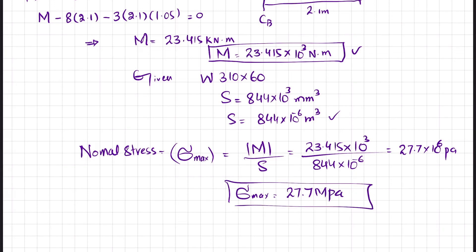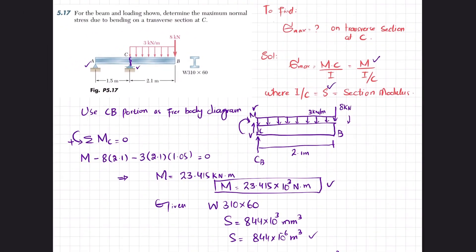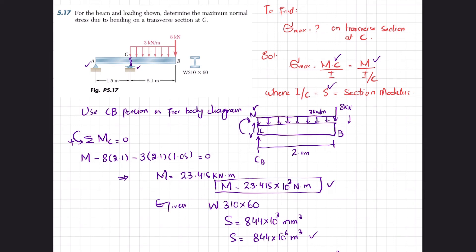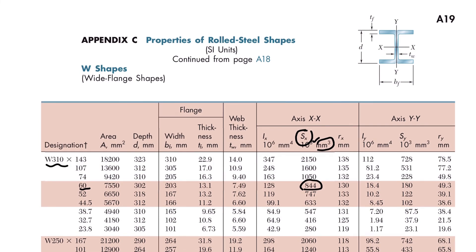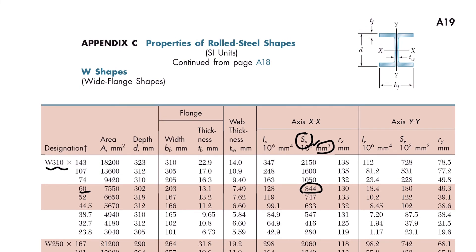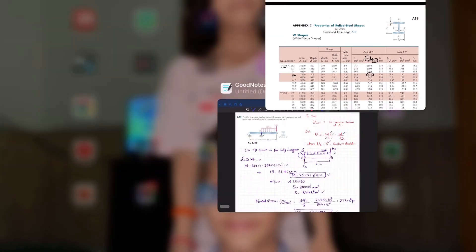This is the answer for Problem 5.17. You can also solve it using σ = M·c/I directly, which requires the values of I and c from the property table. From the table, I equals 128×10⁶ mm⁴ and the height of the section is 302 mm, so c equals 302/2 = 151 mm. Substituting into the formula gives the same stress value at section C.